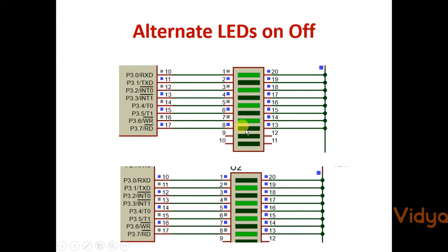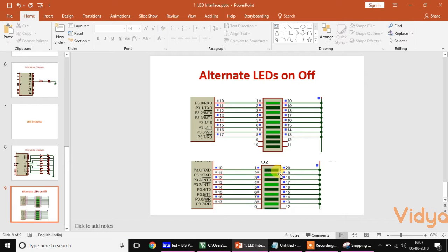So they should look like this: the first time the LED on P3.0 is on, P3.1 is off, P3.2 is on, P3.3 is off, P3.4 is on, and so on. So alternate pins are high, then after some delay the second set of alternate pins are high. That is the program we want to create. Now let us see how we can create the logic for it.